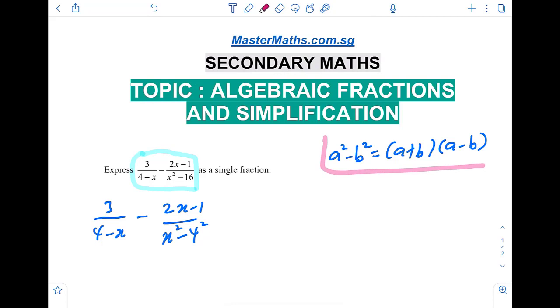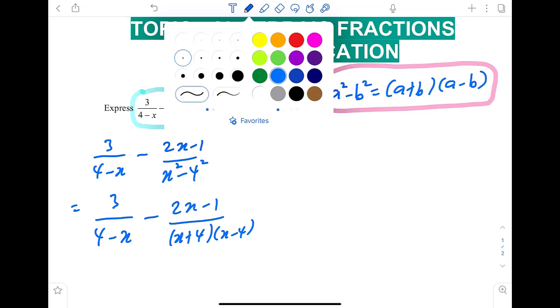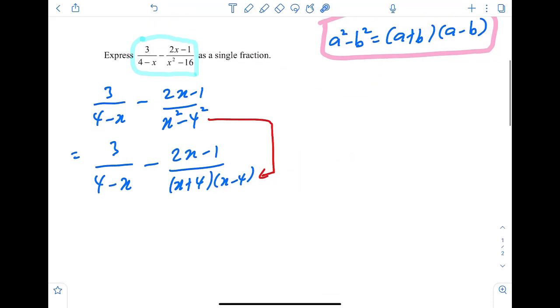Which you can then use your special formula to help you out. 3 over 4 minus x, minus 2x minus 1 over x plus 4 times x minus 4. Again, all I'm doing friends is to use my special formula. Now what we notice between these two denominators is that there is one term that is very very similar but not the same.